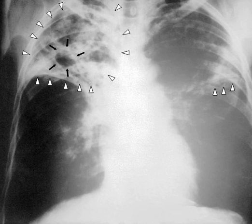Primary resistance occurs when a person becomes infected with a resistant strain of TB. A person with fully susceptible MTB may develop secondary resistance during therapy because of inadequate treatment, not taking the prescribed regimen appropriately, or using low-quality medication. Drug-resistant TB is a serious public health issue in many developing countries, as its treatment is longer and requires more expensive drugs. MDR-TB is defined as resistance to the two most effective first-line TB drugs, rifampicin and isoniazid. Extensively drug-resistant TB is also resistant to three or more of the six classes of second-line drugs. Totally drug-resistant TB is resistant to all currently used drugs. It was first observed in 2003 in Italy, but not widely reported until 2012, and has also been found in Iran and India.